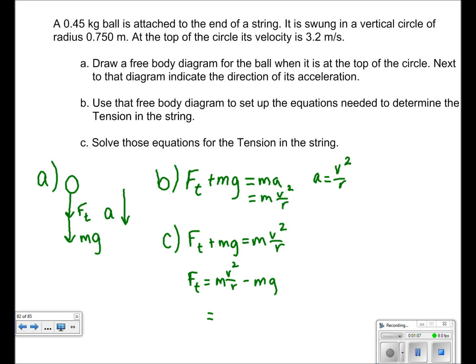to get 0.45 kg times 3.2 squared over 0.75 minus 0.45 times 9.8.